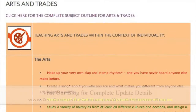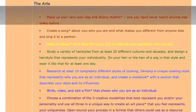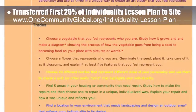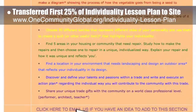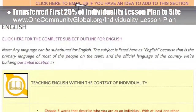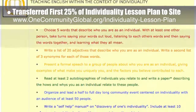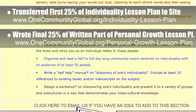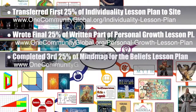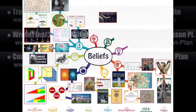This week, the core team transferred the first 25% of the written content for the individuality lesson plan to the website. This lesson plan is purposed to teach all subjects to all learning levels in any learning environment using the central theme of individuality. Behind the scenes, we wrote the final 25% of the written part of the personal growth lesson plan, and completed the third 25% of the mind map for the beliefs lesson plan, bringing it to 75% complete.